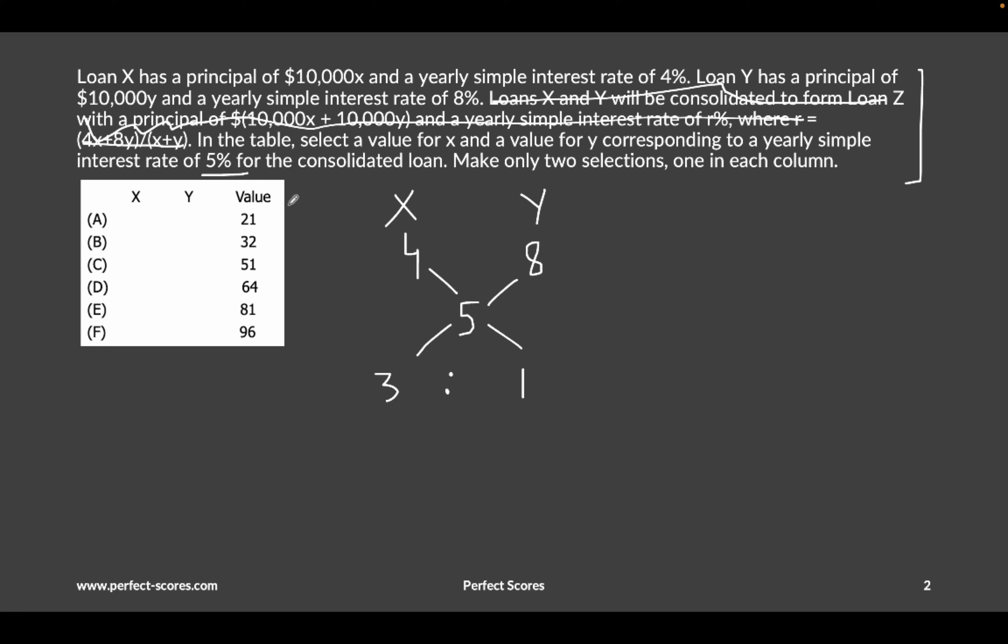We'll start off with Y. If Y is 21, then X has to be 3 times it, which would be 63. That's not one of the answer options. I'm just going to type A, B, C, D, E. That means for Y, answer option A is eliminated.